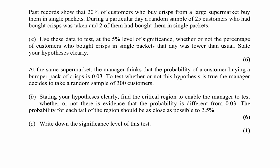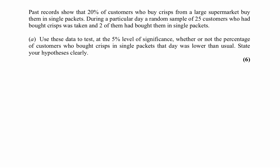Now let's look at question four from June 2002. We're told that 20% of customers who buy crisps in a large supermarket buy them in single packets. On a particular day, a random sample of 25 customers found that two of them bought crisps in single packets. We test at the 5% level whether the percentage buying crisps in single packets that day was lower than usual. The null hypothesis is P equals 0.2.